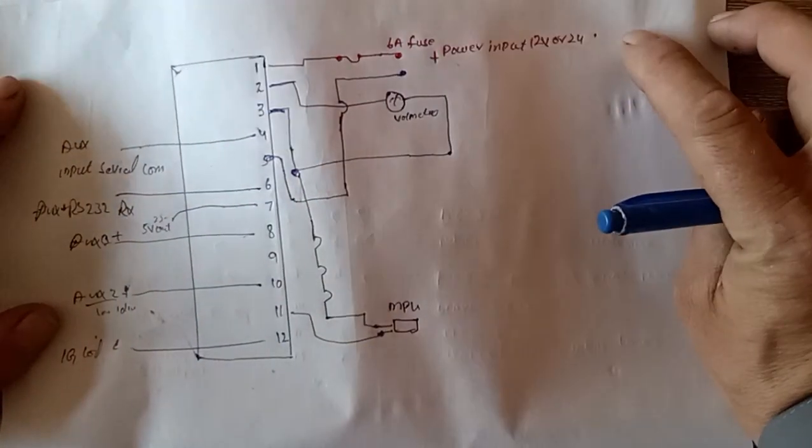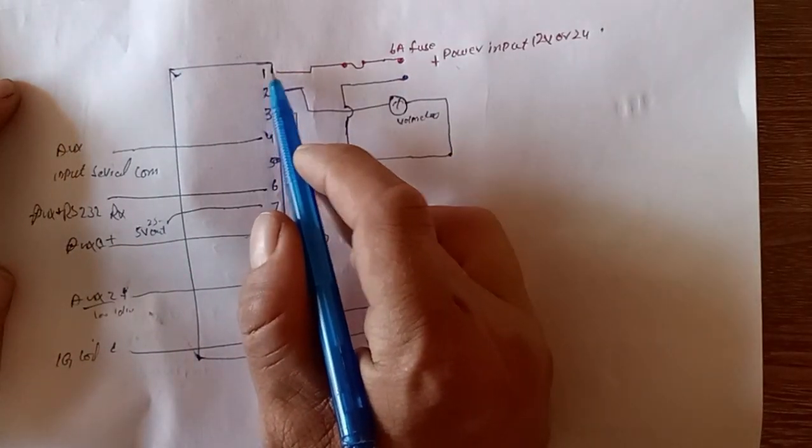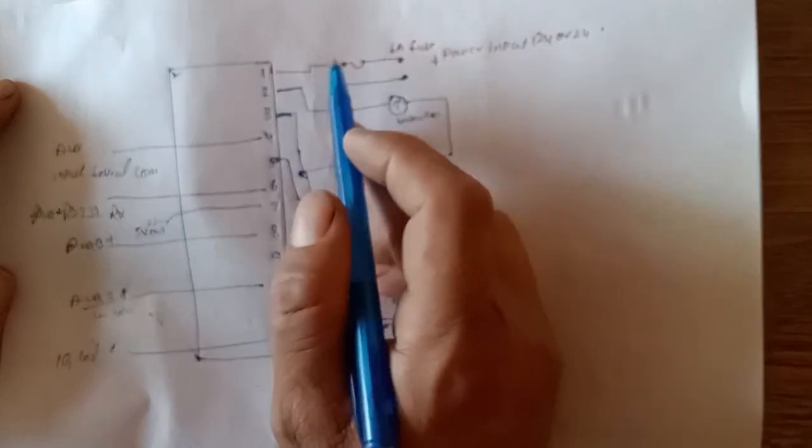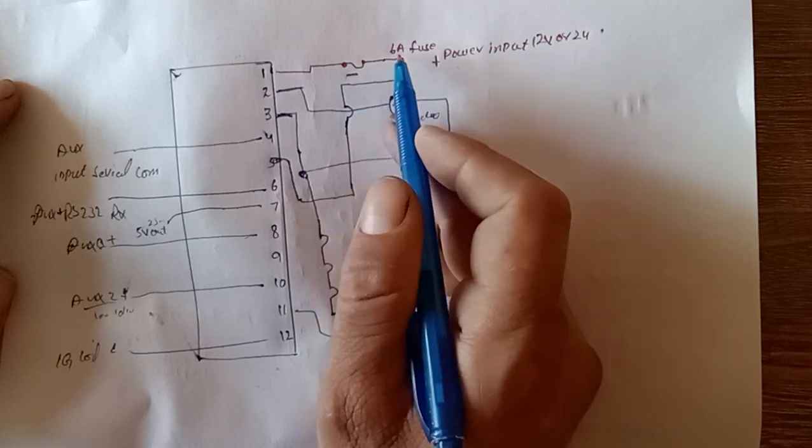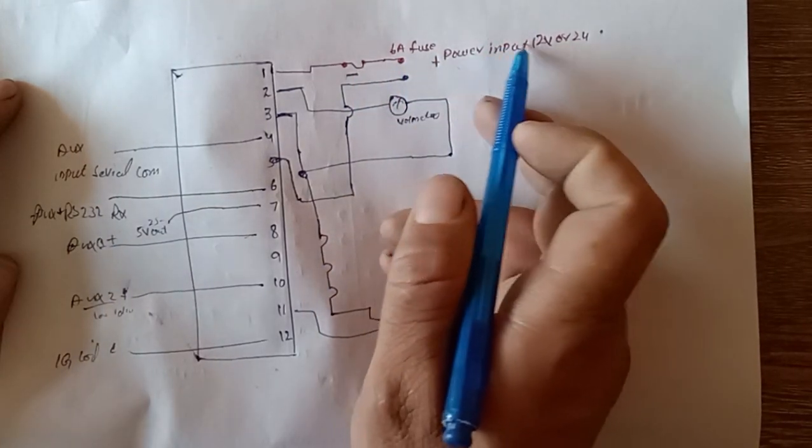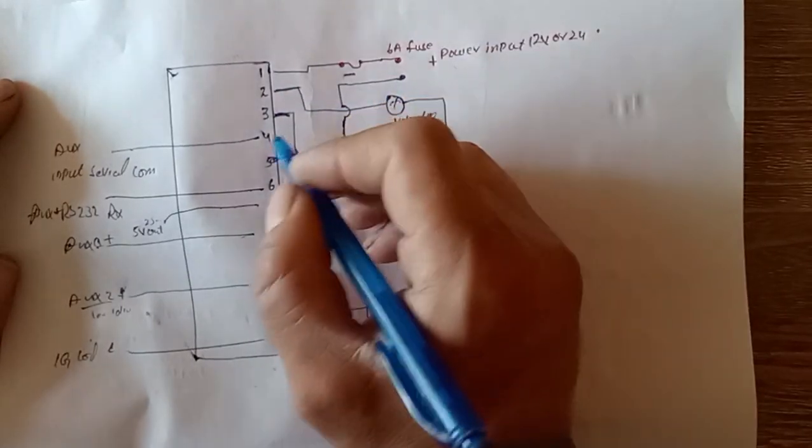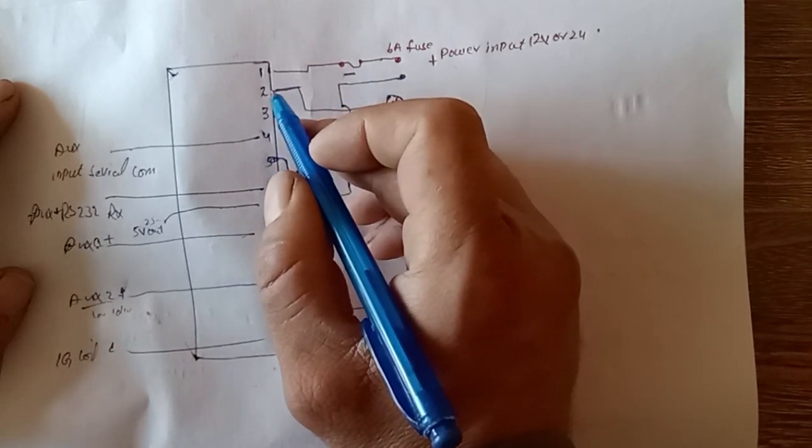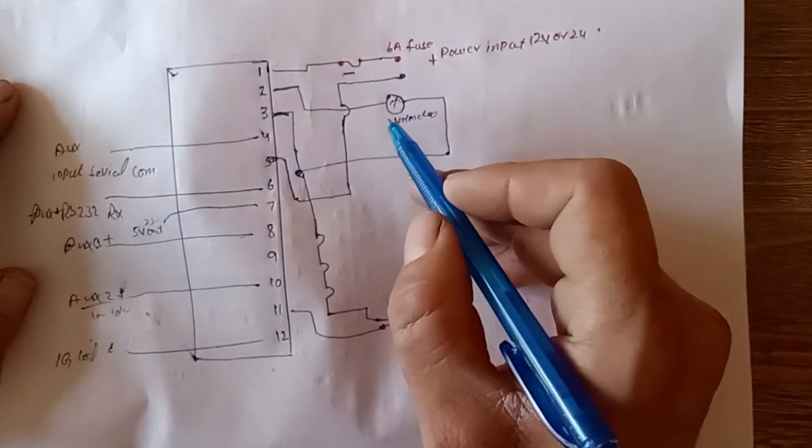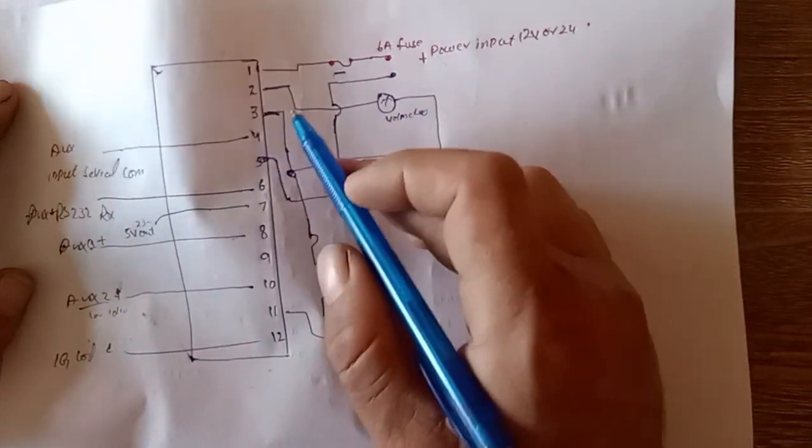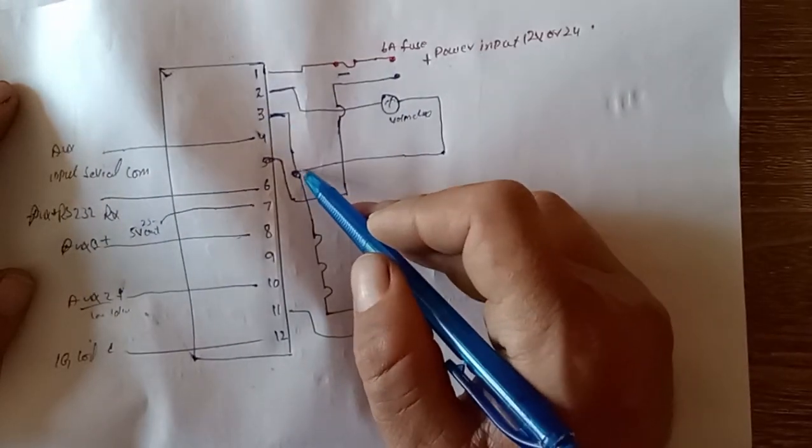I already drew the diagram of the wiring connection. As you can see here, pin number one is directly connected to the power input, 24 volt or 12 volt, your system voltage. After that, number two is going to the voltmeter, and you can connect this with the voltmeter in series, then out and come back to splice and joint with pin three.